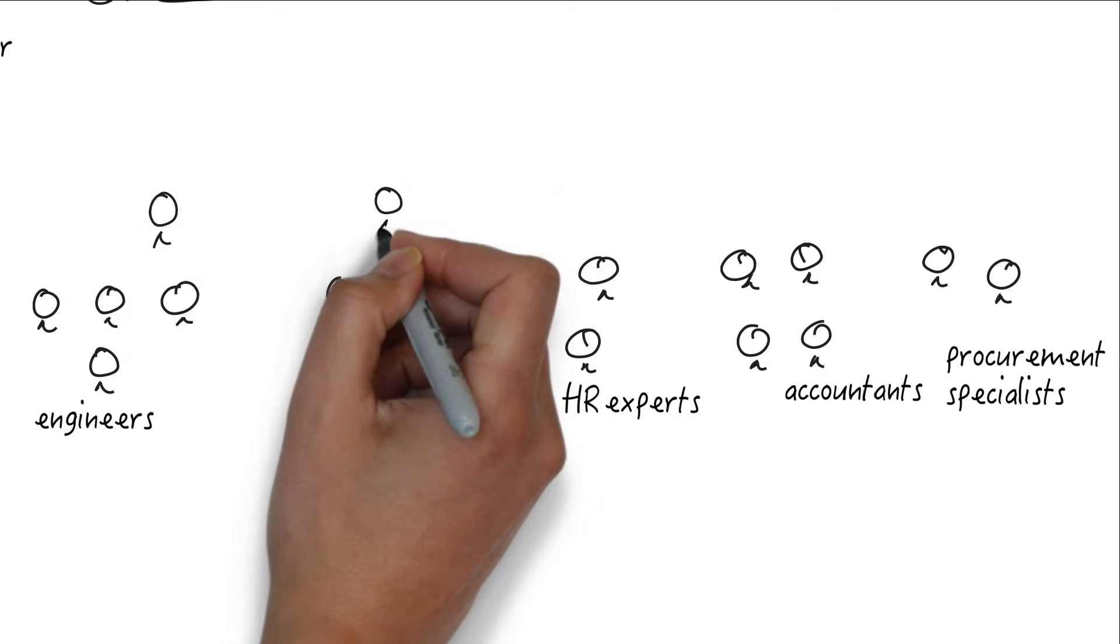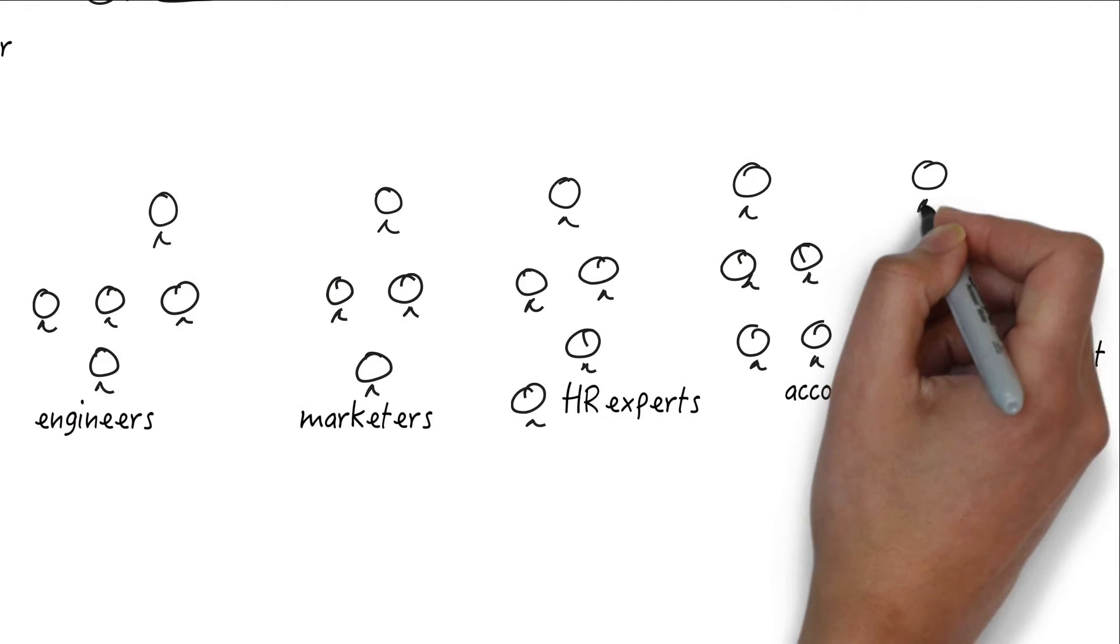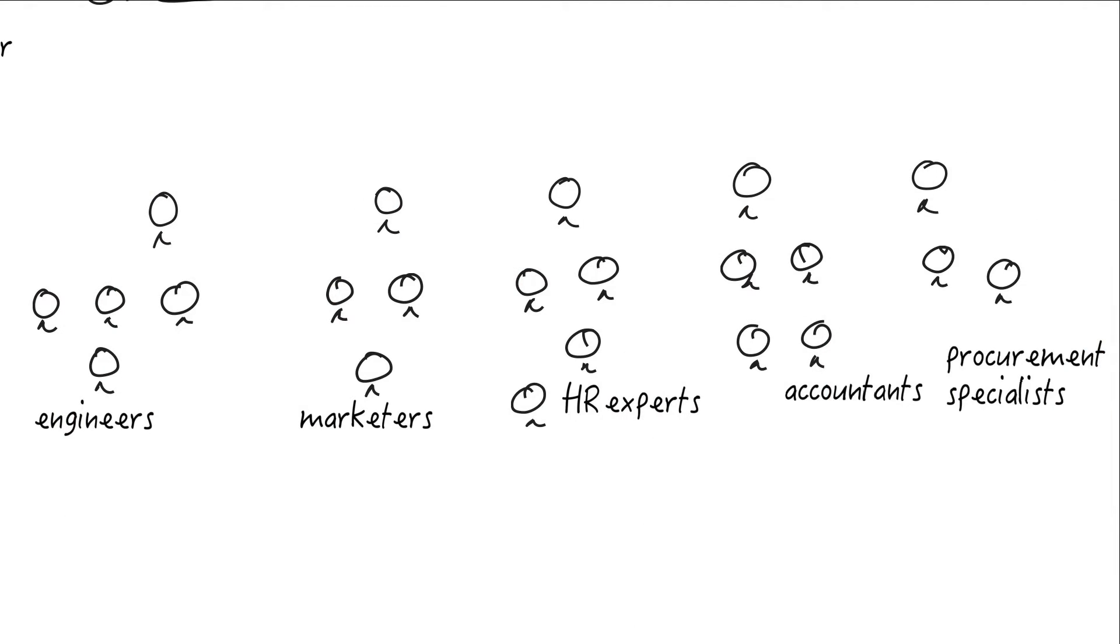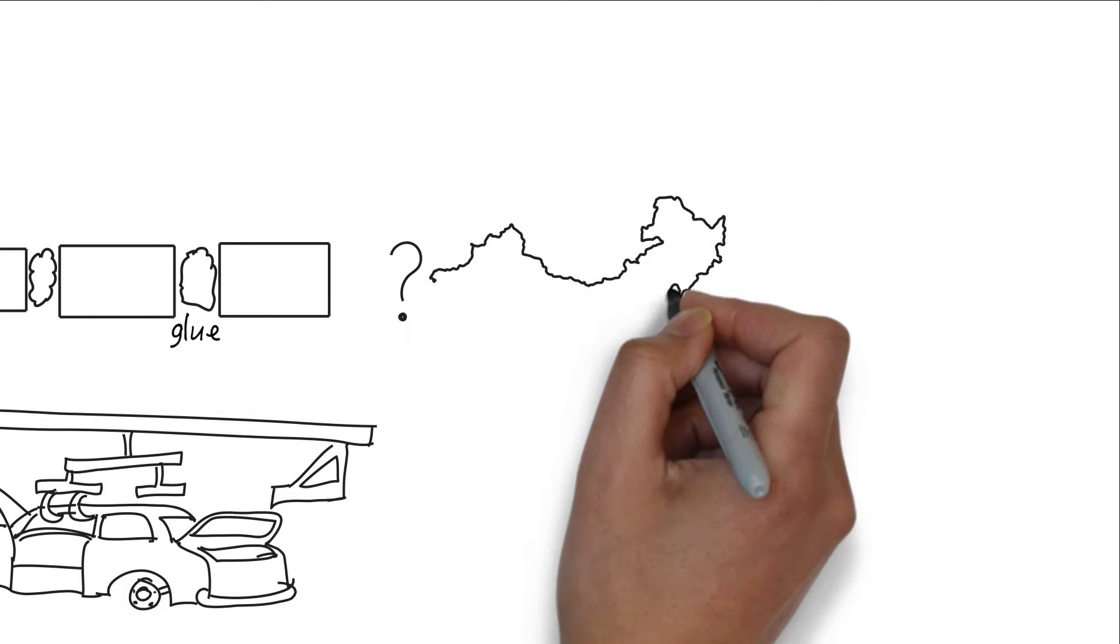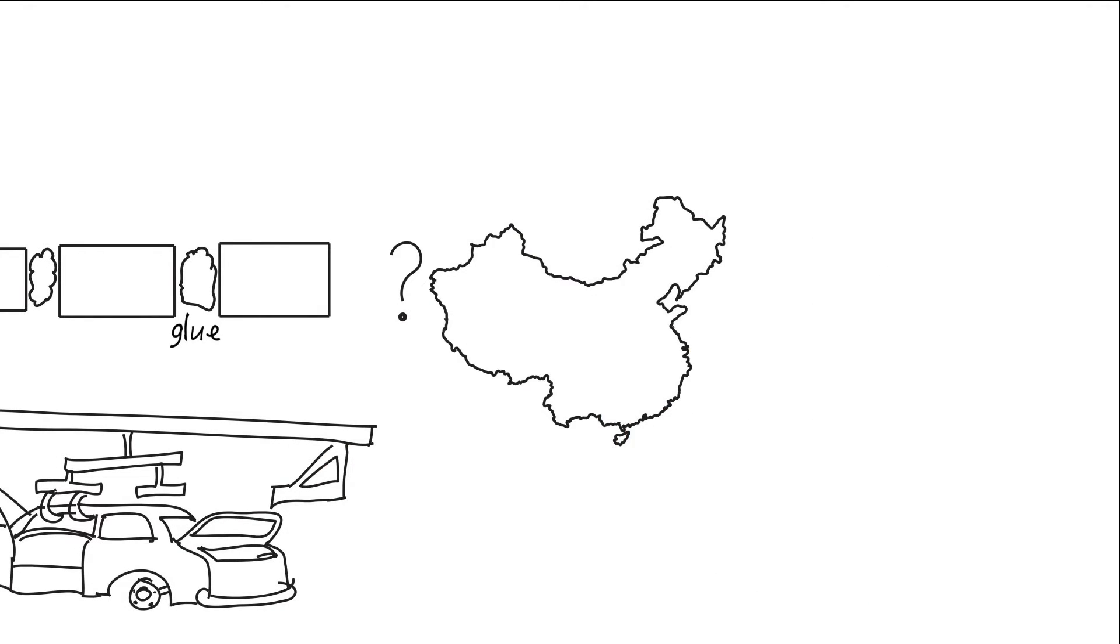And then you'll find executives leading these different functions in the organization. The executive team often needs to make strategic decisions across organizational boundaries. For example, one question could be, should we set up a manufacturing plant in China to capture that market? If so, what would that take?